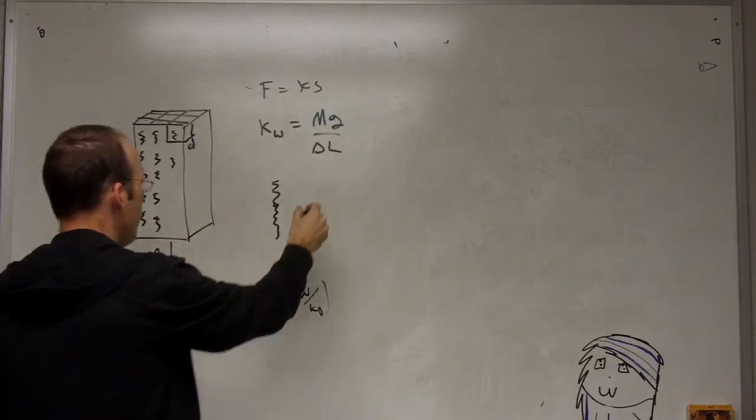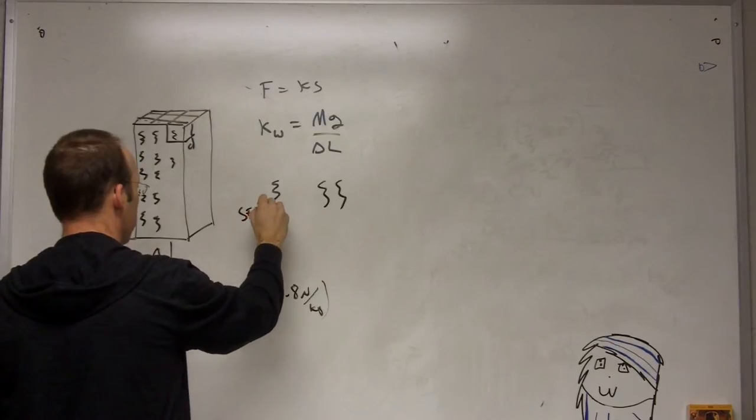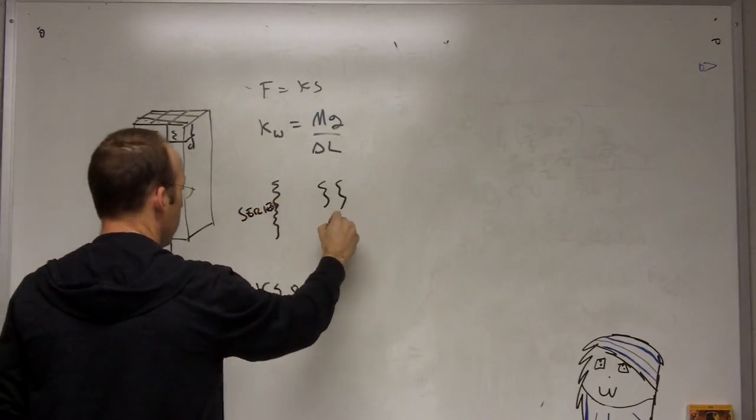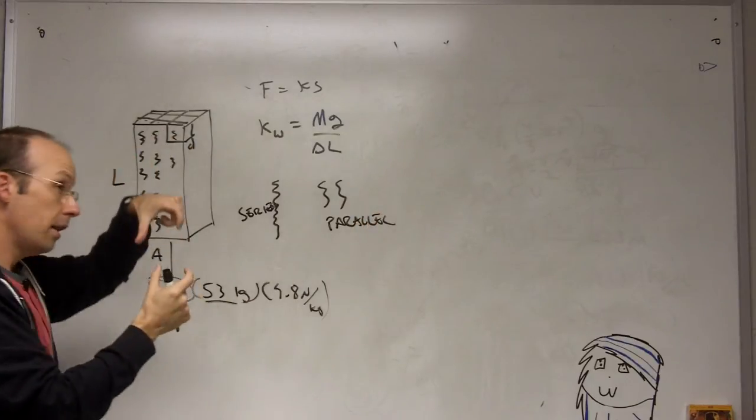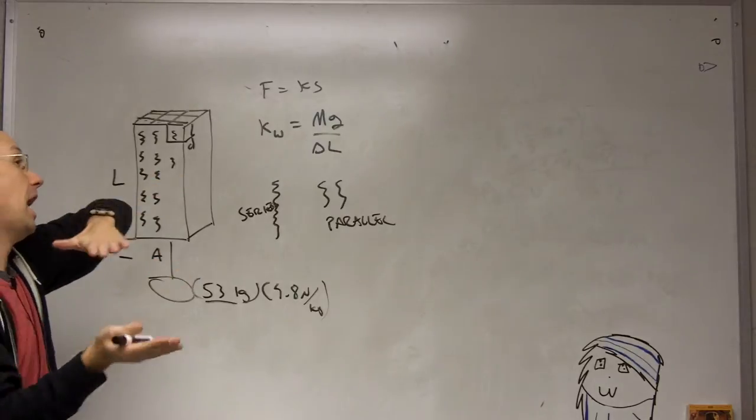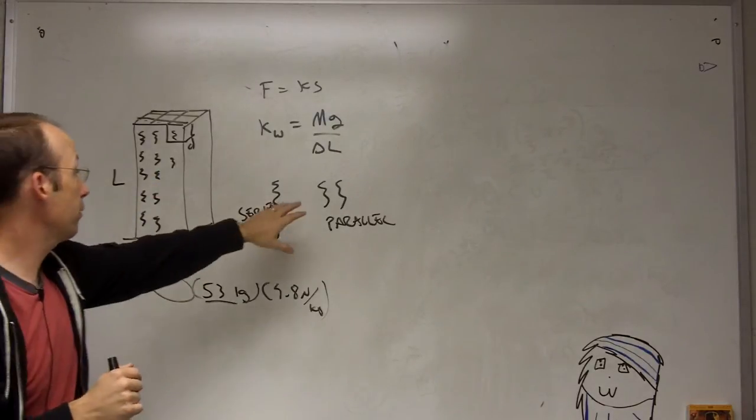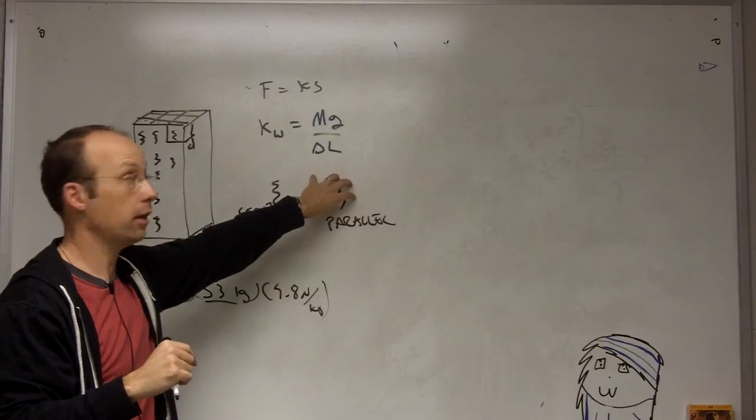And then if I take two springs, we'll call this series. And if I take two in parallel, then when I add a load to the bottom of it, each one only has to stretch half as much in order to support the same load. So it's going to make an effective spring constant that's stronger.